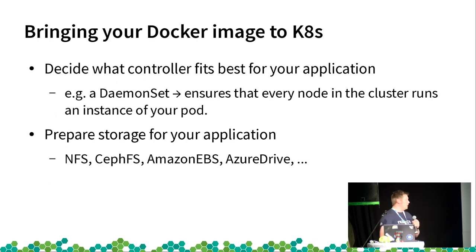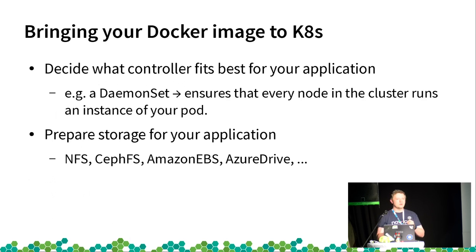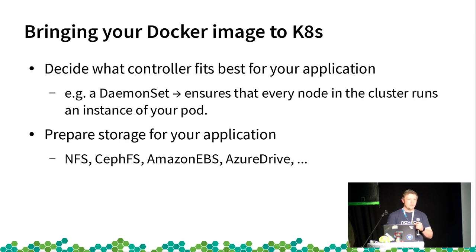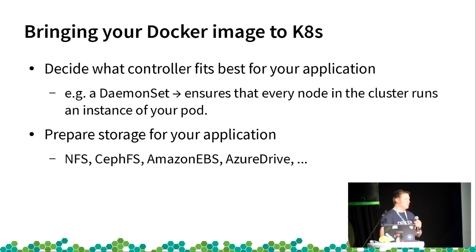When bringing your Docker image to Kubernetes, first decide which controller fits your application. For example, a DaemonSet ensures every node in the cluster runs one instance of your pod. You also need to prepare storage: in Kubernetes this can be NFS, CephFS, Amazon EBS, Azure drives, Google Cloud storage, or a host path — a local directory on your node, which is only reasonable for demo purposes.